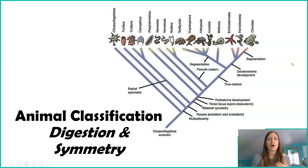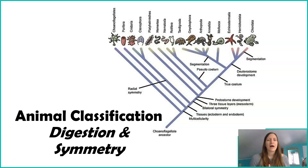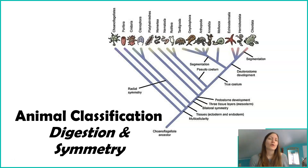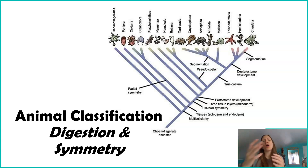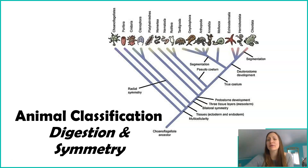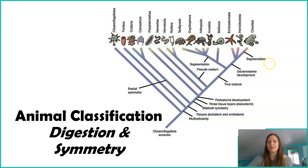Before we start exploring all the different animal kingdoms, we're going to start talking about just characteristics that animals have, or different ways that we can classify animals. Now in this phylogenetic tree that you see, what you're actually looking at is all of the different animal phyla, as well as some characteristics that we see derived.